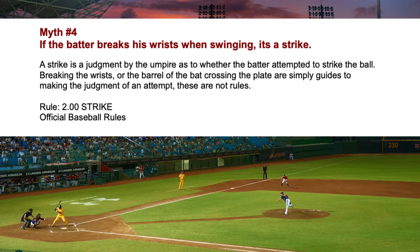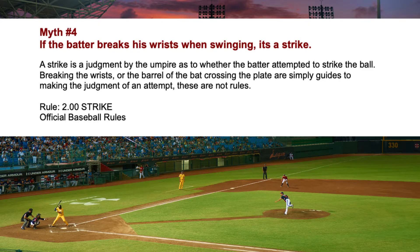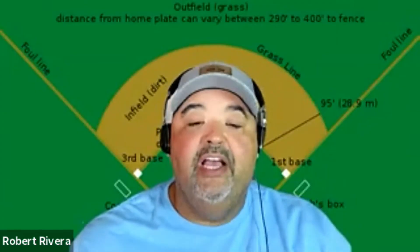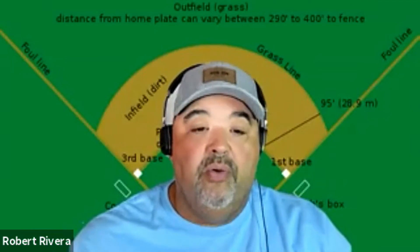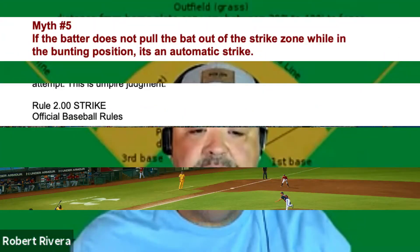Myth Number Four: if the batter breaks his wrist when swinging, it's a strike. A strike is a judgment by the umpire as to whether the batter attempted to strike the ball. Breaking the wrist or the barrel of the bat crossing the plate is simply a guide to making that judgment of the attempt — this is not a rule, it is a straight judgment call. That's Rule 2.00, the definition of a strike.